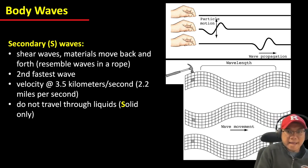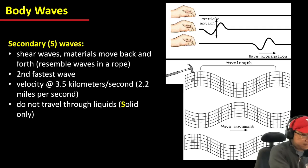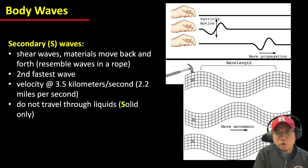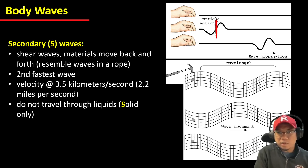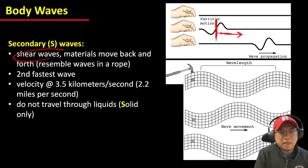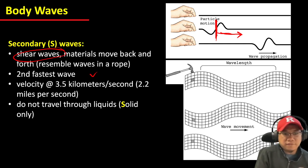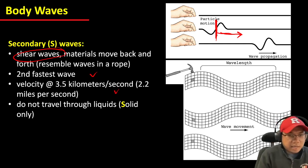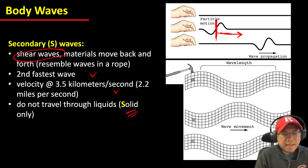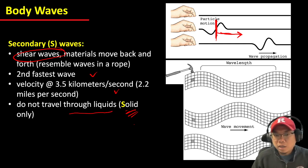The second type of body wave is called S waves, or shear waves, because the particle motions move perpendicular to the wave propagation direction. The particle motion goes to the side, whereas the wave propagation goes to the right. S waves are the second fastest after P waves, but they travel only within solid material — S waves cannot travel through liquid material.